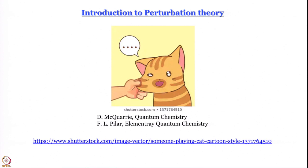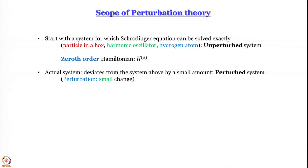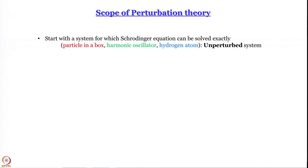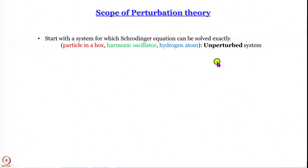We start talking about perturbation theory. The first thing I want to say is: what is the scope of perturbation theory? Perturbation theory is an approximation that you cannot use anywhere and everywhere. In perturbation theory, you start with a system for which you can obtain an exact solution of the Schrödinger equation — for example, particle in a box, harmonic oscillator, or hydrogen atom. These systems, for which exact solutions can be obtained, are called unperturbed systems.